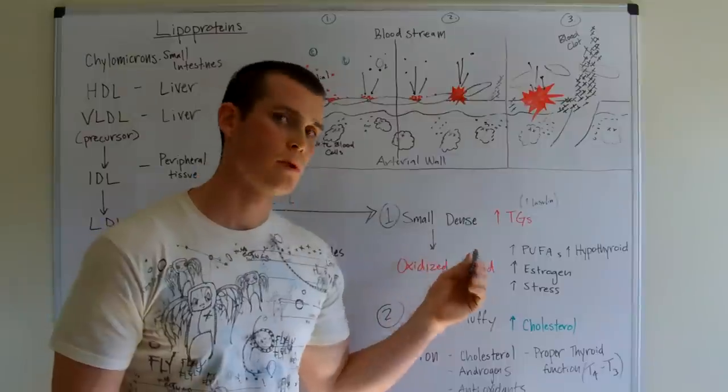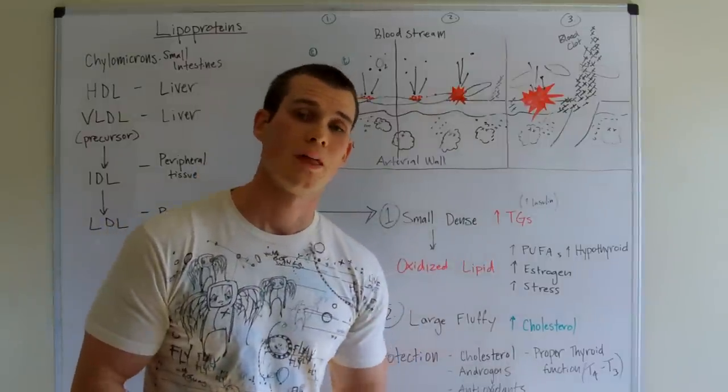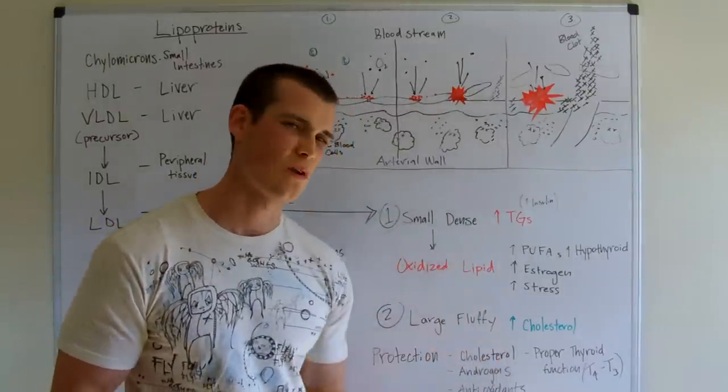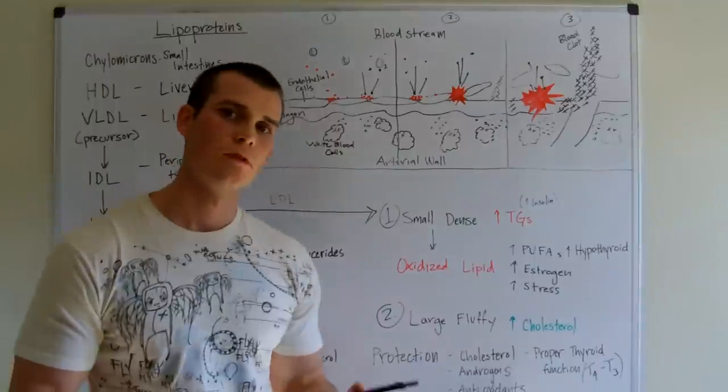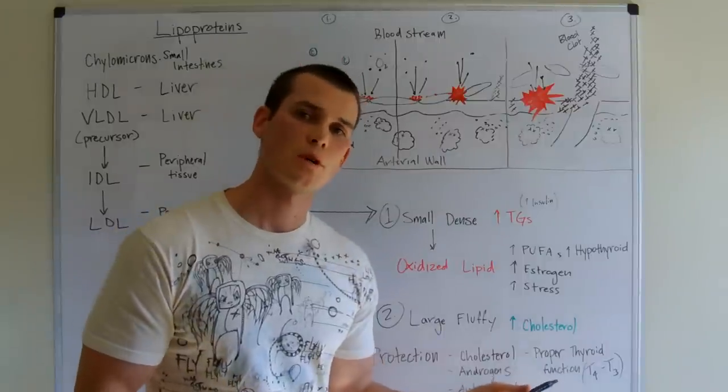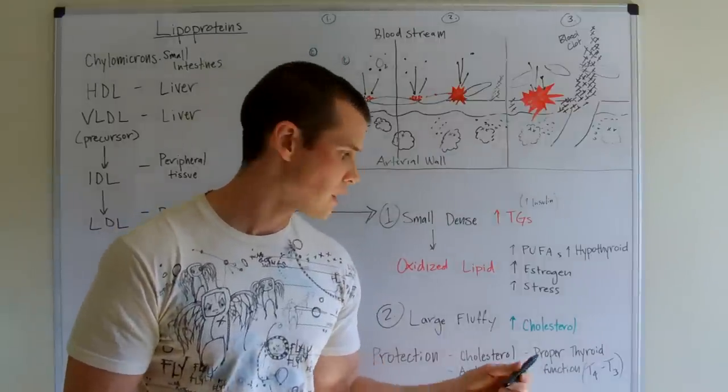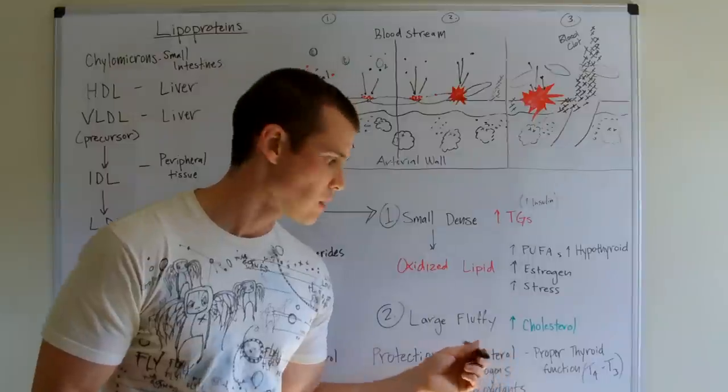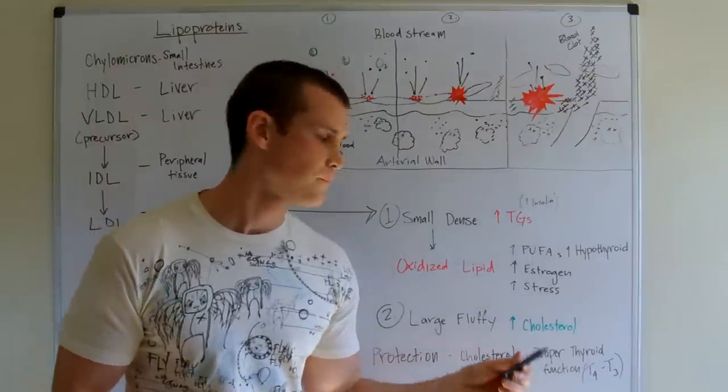Now the small dense lipoproteins are the problematic or the atherogenic ones that we're worried about. You can see by dietary choices if we're having more cholesterol, more saturated fat, the right lifestyle choices, we're going to have more lipoproteins that are large and fluffy, which is a good thing.